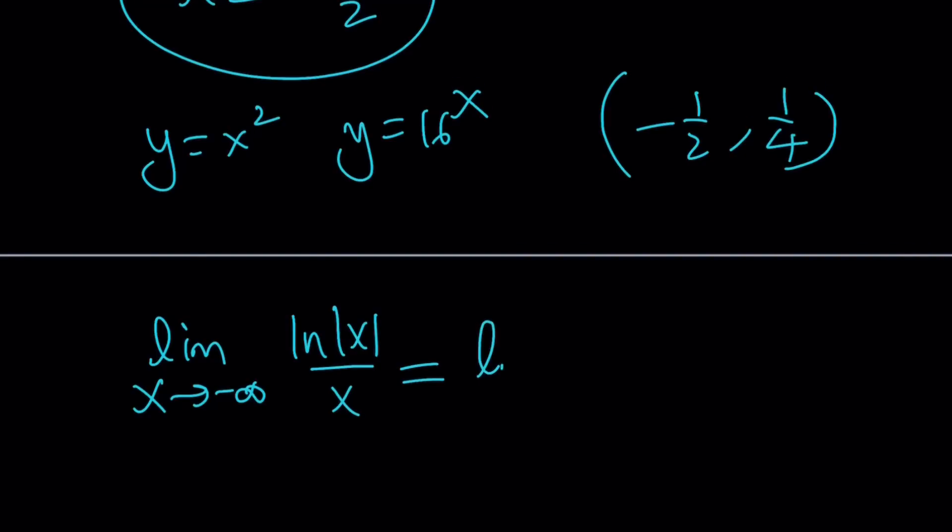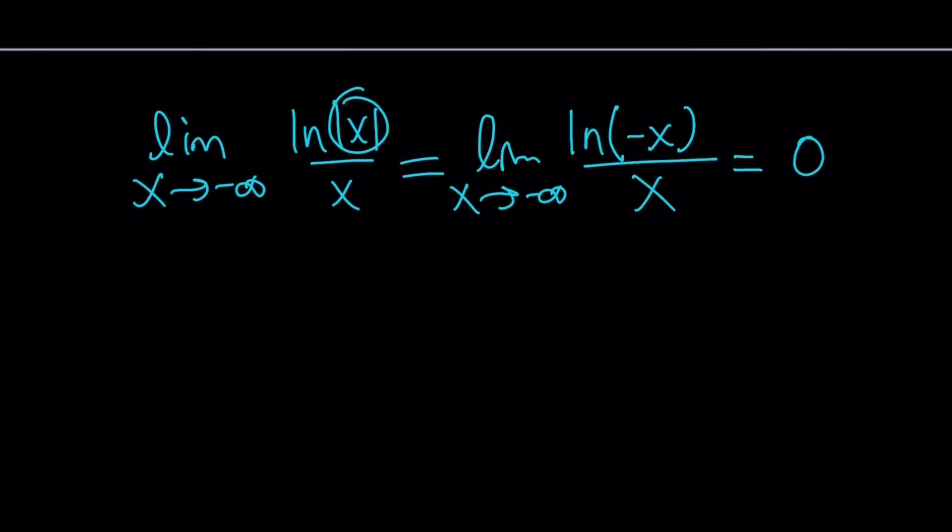Let's check the limit as x approaches negative infinity of ln absolute value of x over x. Notice that when x is approaching negative infinity, obviously the x values are going to be negative. So absolute value of x is going to be negative x. I know this is going to look weird, but that's okay because ln negative x is defined because x is negative. Negative x is positive. I hope that makes sense. And since x is going to grow faster than the log function, it's just a matter of rates, the denominator is going to approach infinity faster.